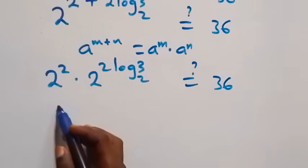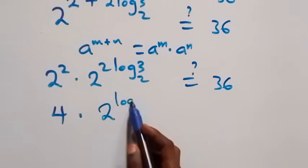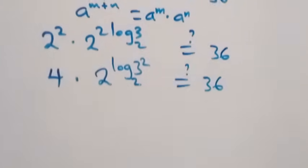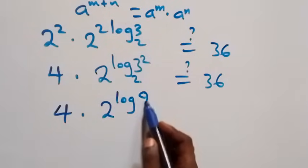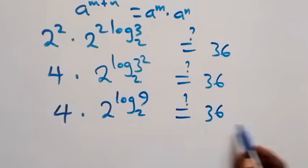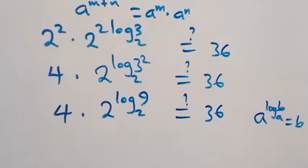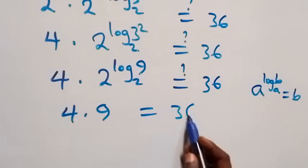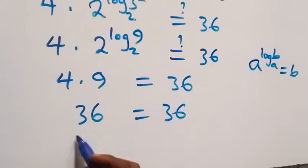Now 2 raised to power 2 becomes 4. We reverse the power log: 2 raised to power log 3 squared base 2 equals 9. Using the identity a raised to power log b base a equals b, we get 4 times 9 equals 36. And indeed 4 times 9 gives us 36, which equals 36 on the right-hand side.